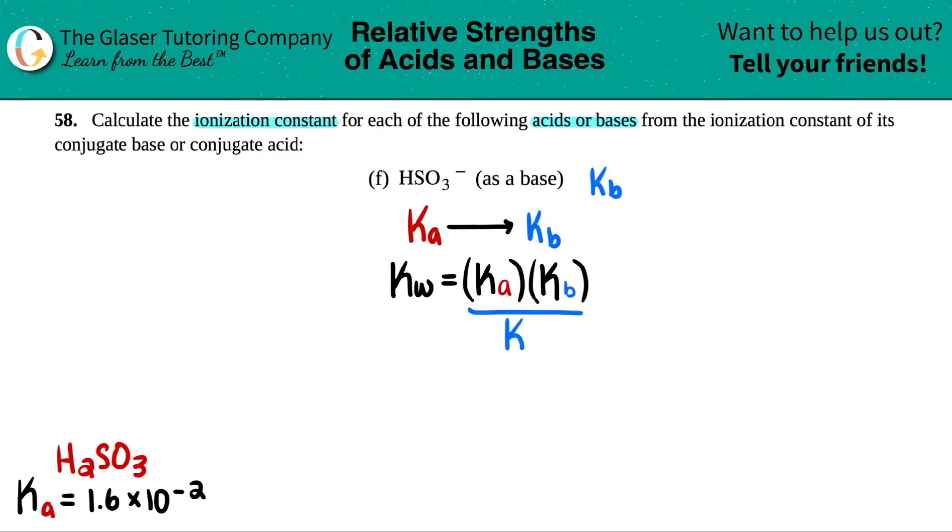What we would do is divide each side by Ka. This would cancel out and you get KW divided by Ka. For simplicity of this video, I'm just going to do that right away.